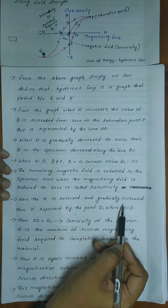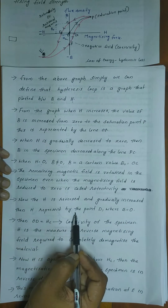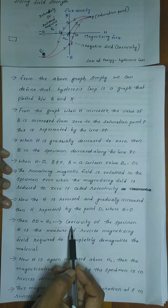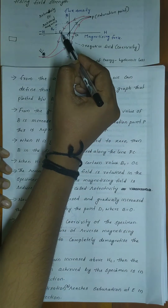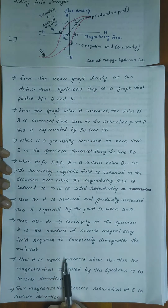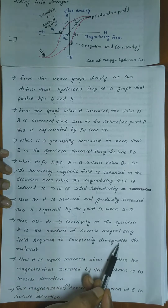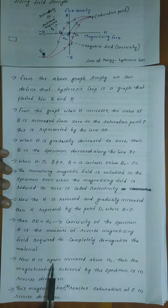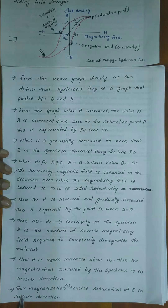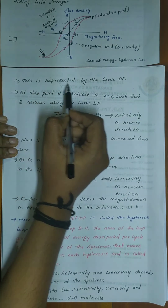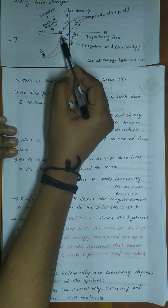When H is reversed and gradually increased, it reaches point D where B equals 0. OD equals HC, which is the coercivity of the specimen. Coercivity is the measure of the reverse magnetizing field required to completely demagnetize the material. When H is increased further above HC, the magnetization achieved by the specimen is in the reverse direction. The magnetization B reaches saturation at point E in the reverse direction. This is represented by the curve DE.